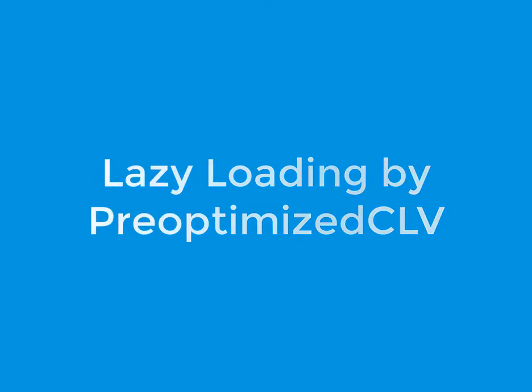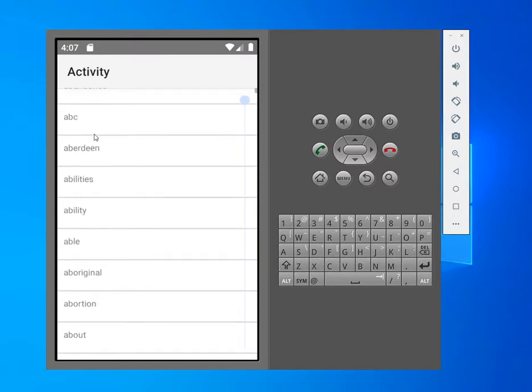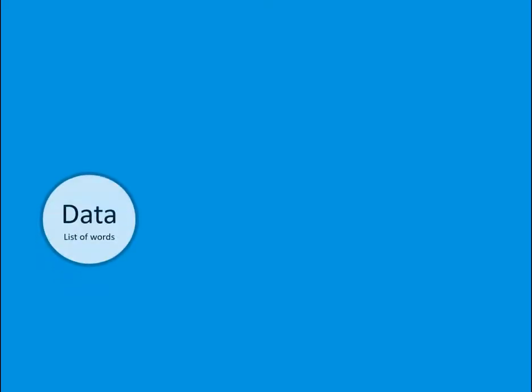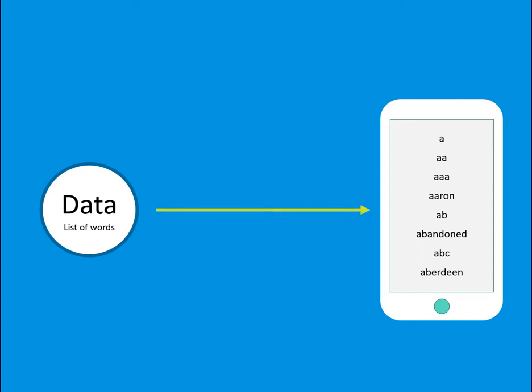My name is Moala and in this tutorial I want to continue talking about lazy loading in custom list view. Here I want to use a pre-optimized custom list view library. This will be the final result of this session. As you see I have a long list of words and I can scroll up and down, and that is fast scroll which helps me to go to any part of the list. We have a list of 10,000 words and we want to show them in custom list view. To load all the items, which is 10,000 words, we can use the pre-optimized custom list view which handles lazy loading for us easily.